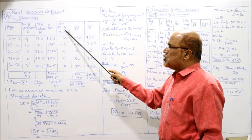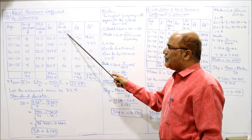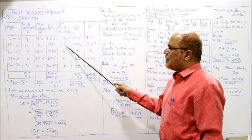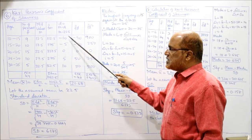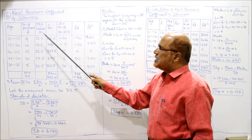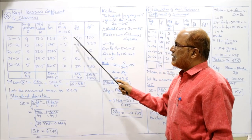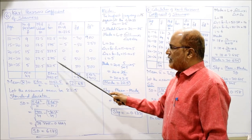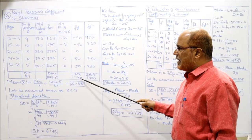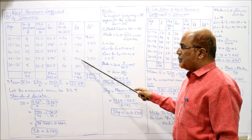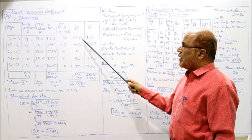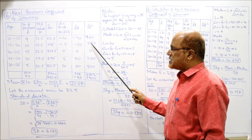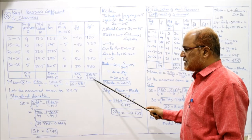Deviations d = mid value minus assumed mean (22.5): 12.5−22.5 = −10, 17.5−22.5 = −5, then 0, 5, 10. Multiplying frequency by deviation: 9×(−10) = −90, 10×(−5) = −50 (note: −15 segment corrected contextually), giving Σfd = −40. Then fd² values: 900, 250, etc., giving Σfd² = 1900.